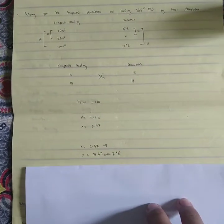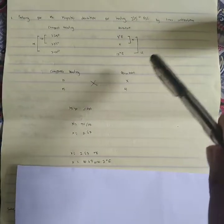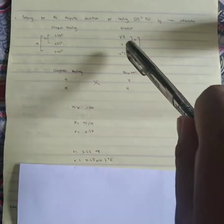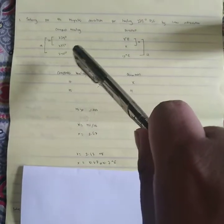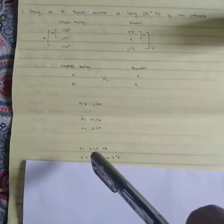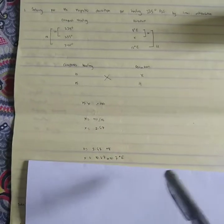After solving for X, we must add 8 because the deviation of 225 degrees is 8 degrees East. So 2.67 plus 8 gives us 10.67, or approximately 10.7 East. Therefore, our compass heading is 235 degrees and the deviation is 10.7 East.